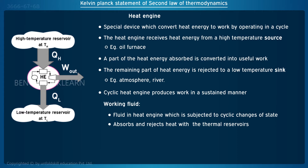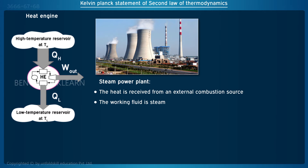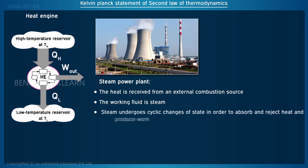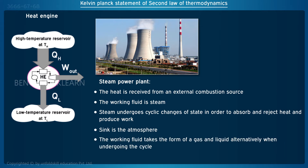The perfect example of a heat engine is a steam power plant. The heat is received from an external combustion source. The working fluid is steam, which undergoes cyclic changes of state in order to absorb and reject heat. Here the sink is the atmosphere. The working fluid takes the form of a gas and liquid as it passes through the cycle.